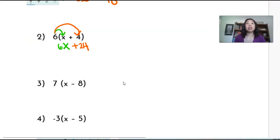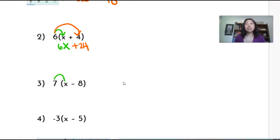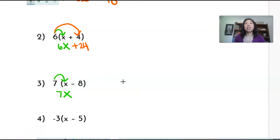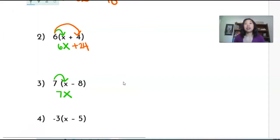Next I have, I'm going to rainbow seven times x and that's going to get me 7x. Then I'm going to rainbow seven times negative eight.